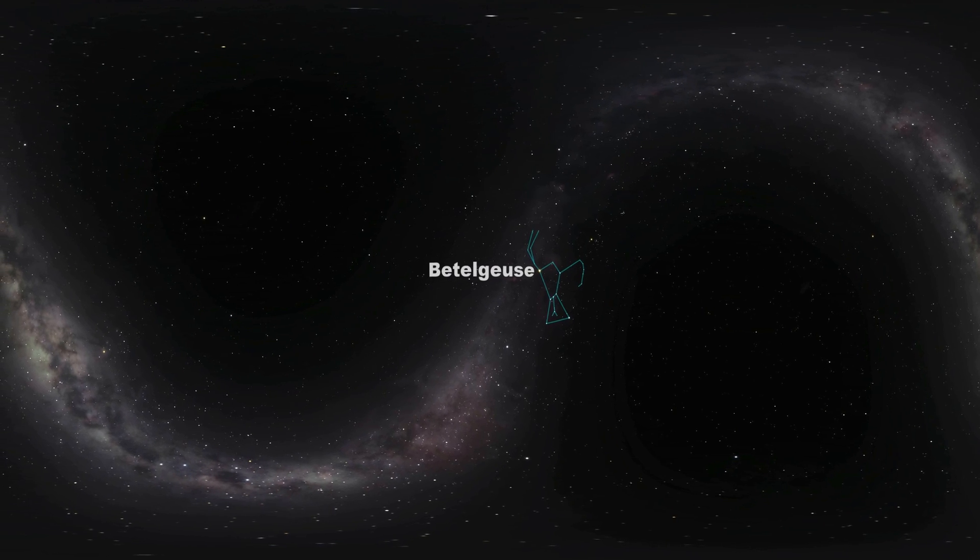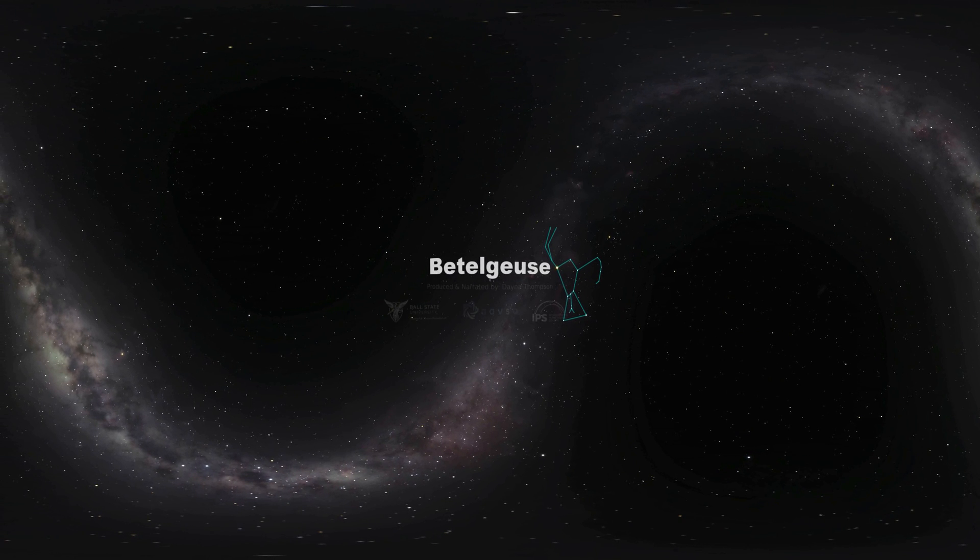To help you explore Betelgeuse, Orion, and the rest of your night sky, try using a star chart or an app on your phone, or you can use our special handout.